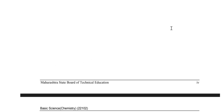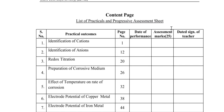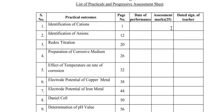The next page is the content page, which is very important for practicals. In this page, practical outcomes and experiment titles are given. The first is identification of cation, then identification of anion, redox titration, preparation of corrosive medium, effect of temperature on rate of corrosion, electrode potential of copper metal, and electrode potential of iron metal.